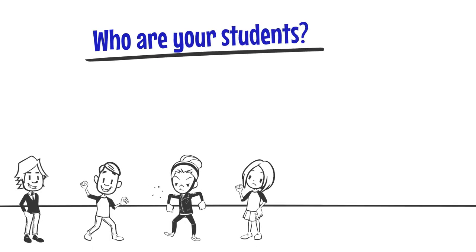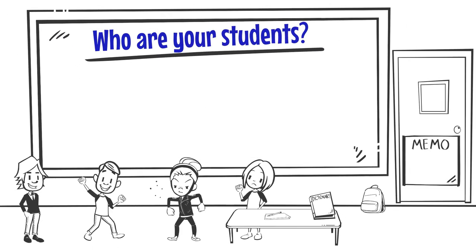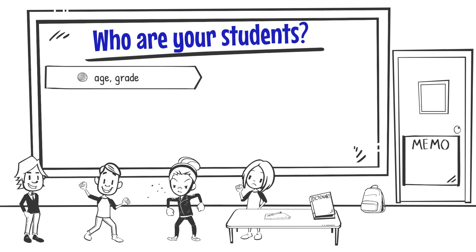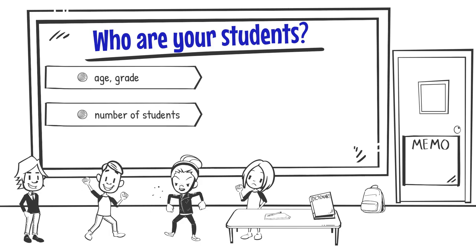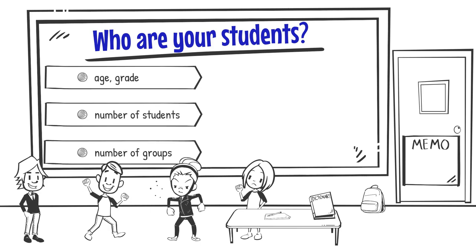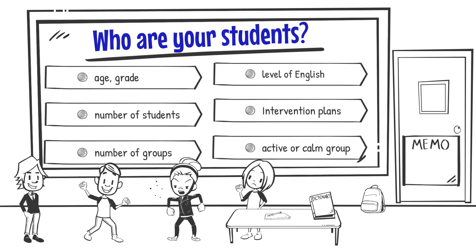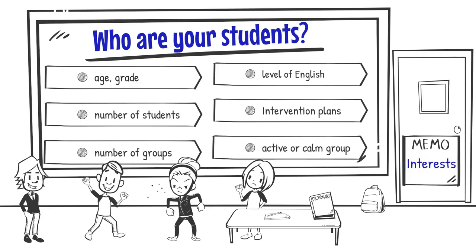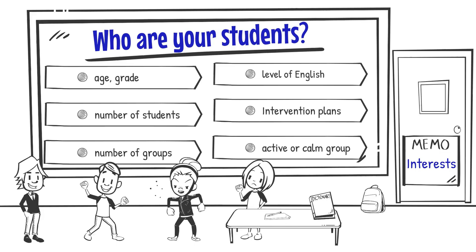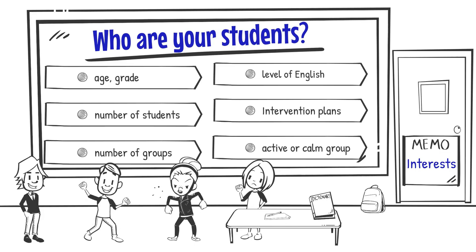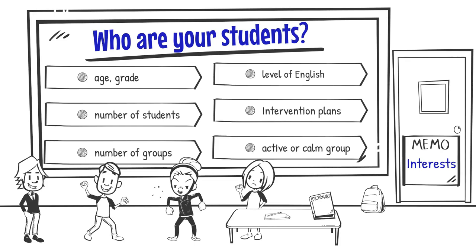The students we work with every year change: their age, their grade, the number of students, the number of groups, the level of English from weak to strong, intervention plans, and whether they're active or calm. What are the resources available to meet their needs and interests?